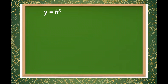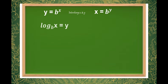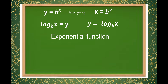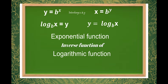Let us review the exponential function in the form y is equal to b raised to x. Interchanging x and y, we have x is equal to b raised to y. Let us express this exponential function into logarithmic form. That is, log of x to the base of b is equal to y, or y is equal to log of x to the base of b. From here, we can say that the exponential function is the inverse function of the logarithmic function.